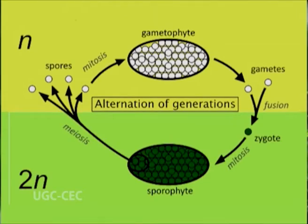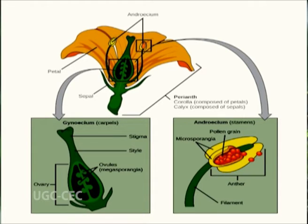During the angiosperm life cycle, the sporophyte produces two types of spores: microspores and megaspores. The microspores give rise to male gametophytes and megaspores give rise to female gametophytes. These gametophytes develop within the sporophytic tissues, which are the sexual organs of the flower.